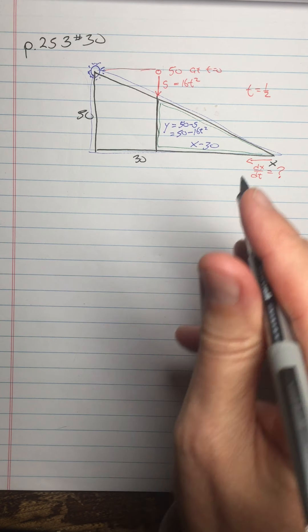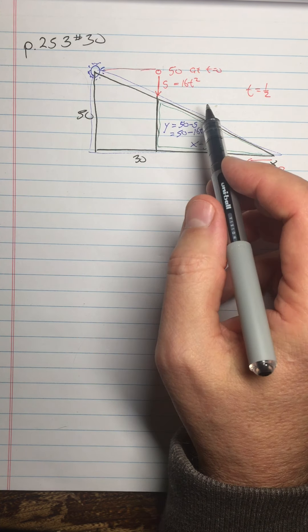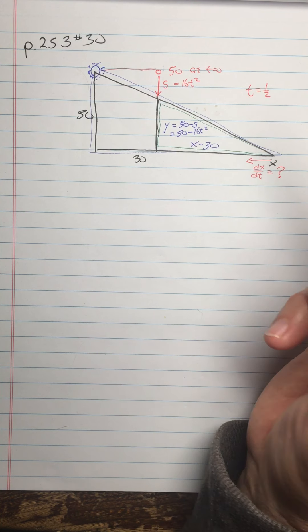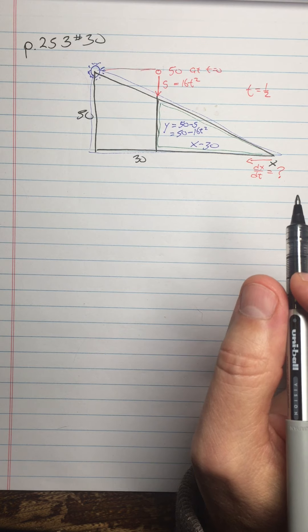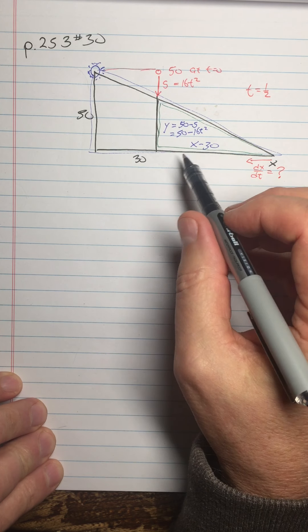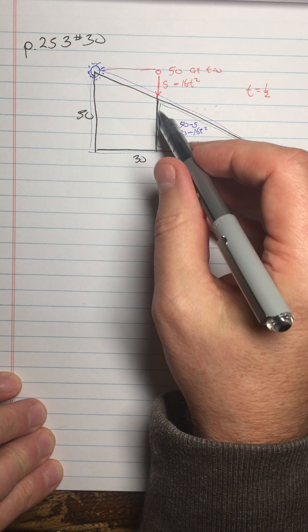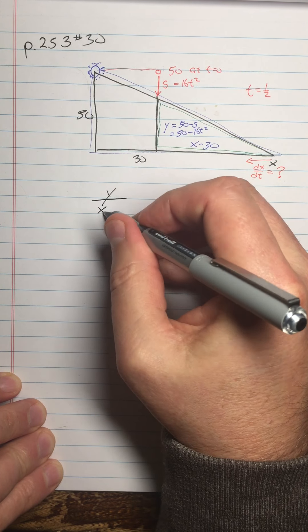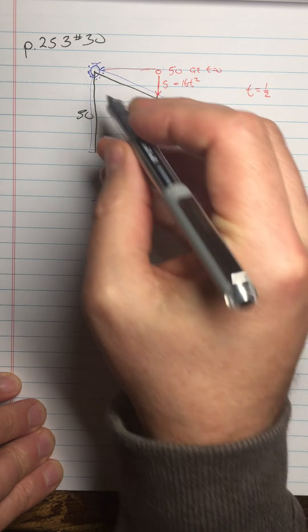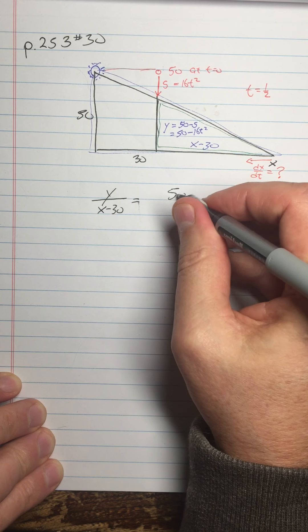All right, now I've got enough information to write a proportion using just two variables, x and t. So since I know the rate at which things are falling, they're actually probably, as I think about it, more than one way to set up this problem, I'm sure. But I did it like this, and so let's start with, you know, the basic fundamental proportion here is that y over x minus 30, this side over this side, y over x minus 30, is equal to this side over this side, which is 50 over x, 50 over x.